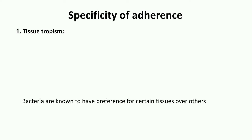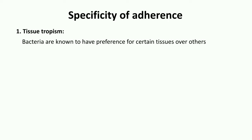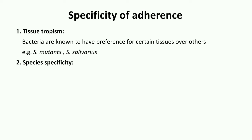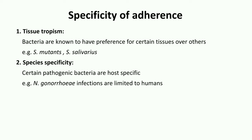The specificity of adherence is supported by many observations which provide direct or indirect evidence. The first is tissue tropism — bacteria are known to have a preference for a certain tissue over others. For example, Streptococcus mutans is abundantly found in dental plaques but does not occur on the epithelial surface of the tongue. Species specificity refers to the fact that certain pathogenic bacteria infect only certain species of animals. For example, Neisseria gonorrhoeae infections are limited to humans, whereas enteropathogenic E. coli K88 strain infections are limited to pigs.